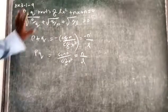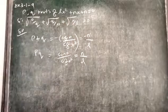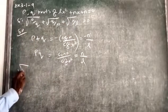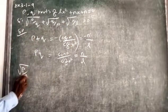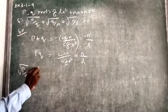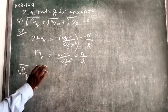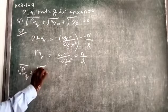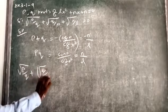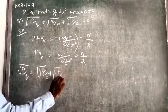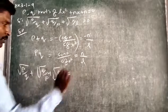Now, we want to verify the result. Take the term first. We have square root of B by Q, then square root of Q by B, then square root of N by L, all equal to zero.